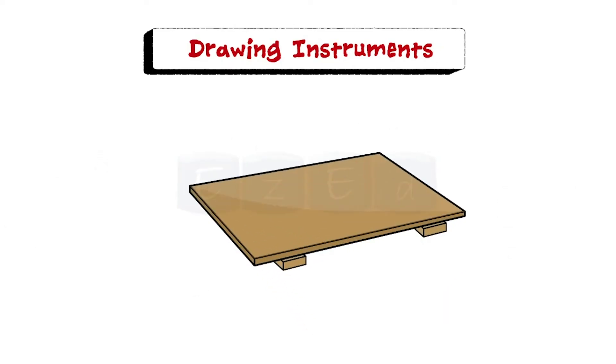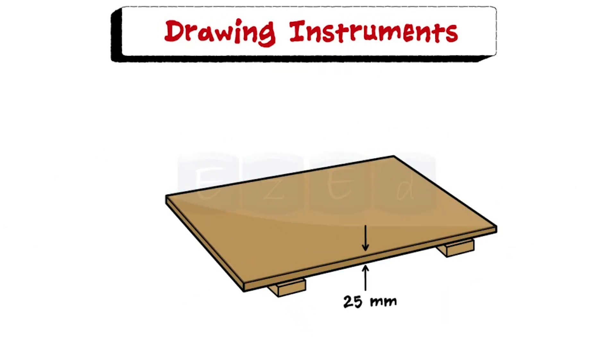Drawing board is rectangular in shape and is made of wood about 25mm thick. It is cleated at the back by two battens to prevent warping. The surface of the board should be smooth and it is used to keep the drawing paper. There is a working edge at the side of the drawing board.